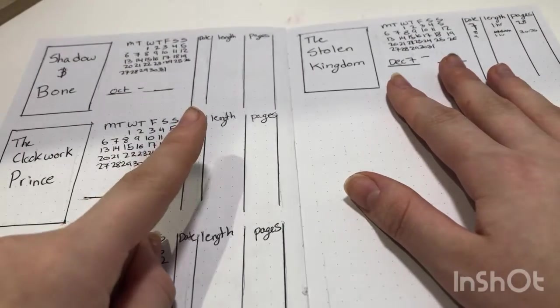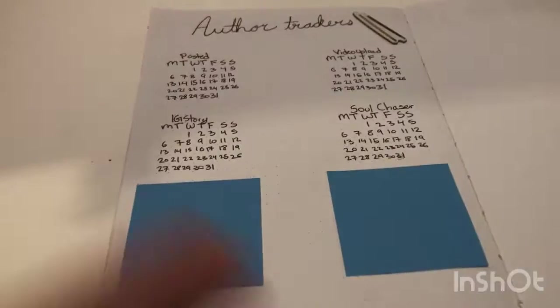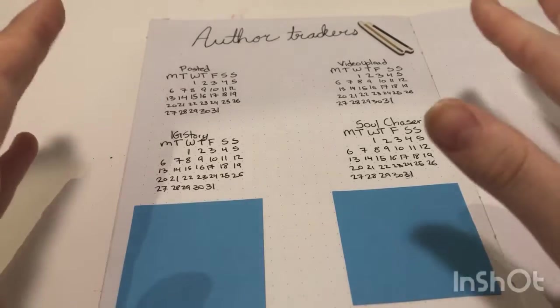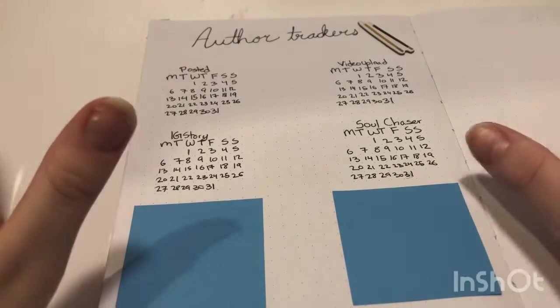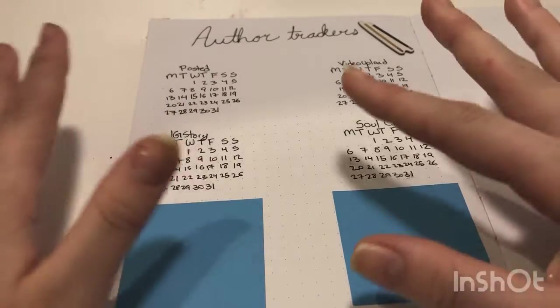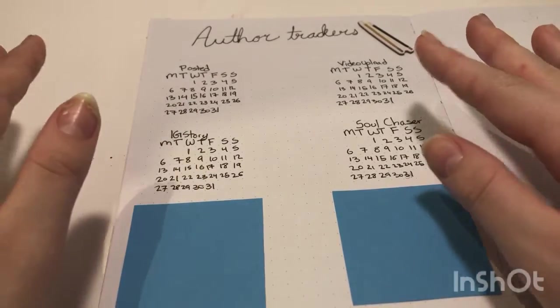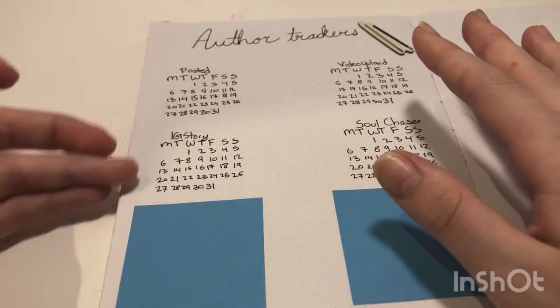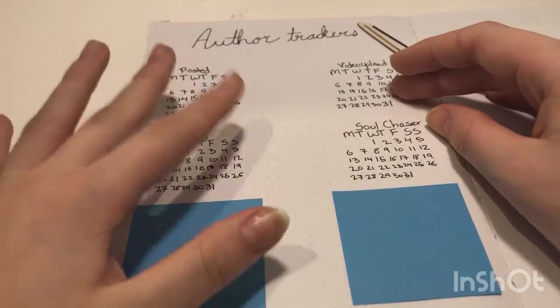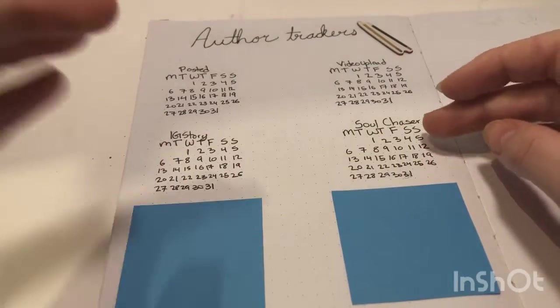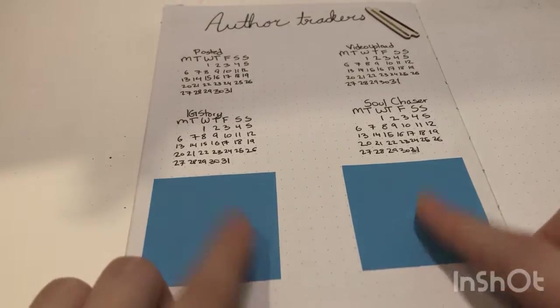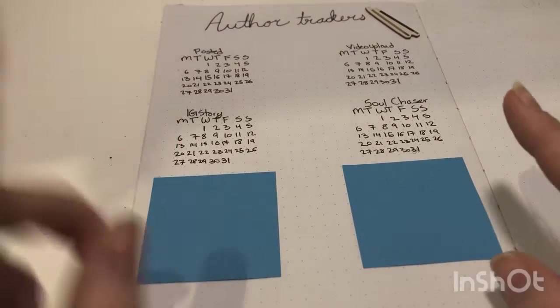Now let me show you the author trackers. Alright guys, so this is my author tracker. So like I said, these are just simple trackers that you can mark off with a marker. What days I did them so that I can see my consistency and where I need to improve for the new year. So like when I posted or did Instagram stories or when I uploaded a video here on YouTube, or when I wrote for Soul Chaser and I have other writing projects here, but I'm not going to release the titles of them. One of them, you know, is Project Angel.